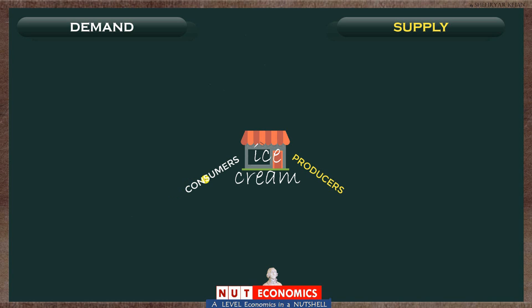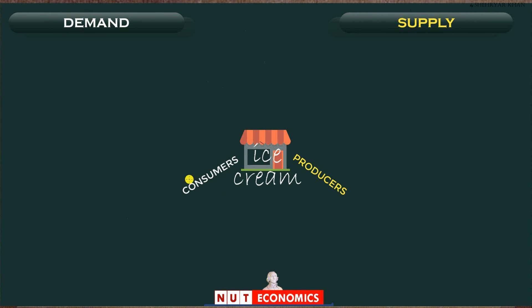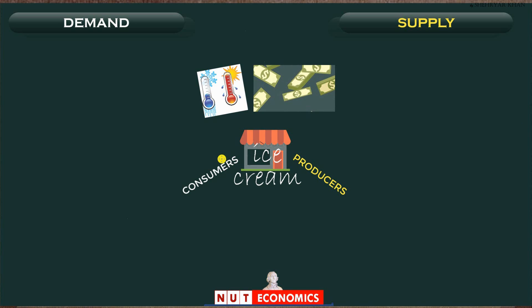Let me zoom in and focus on the consumer side first. As far as these consumers are concerned, they will have to decide how many ice creams they want to buy, and their decision will depend on a lot of factors. For instance, weather — if it gets unusually hot, consumers will want to buy more ice creams; if it's unusually cold, they may buy fewer. Similarly, the incomes of people in this market will also determine how many they buy — if there is a recession and people lose their jobs, maybe they will buy fewer ice creams. We can come up with many such factors, but we will assume all of these to be constant.